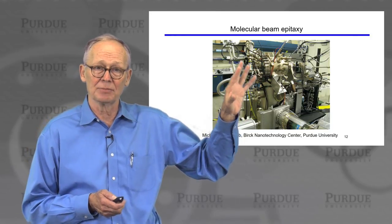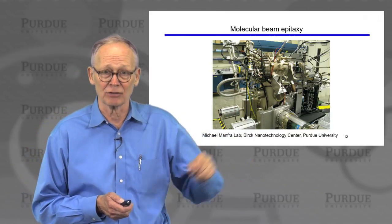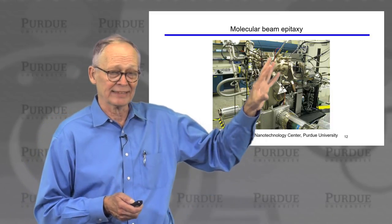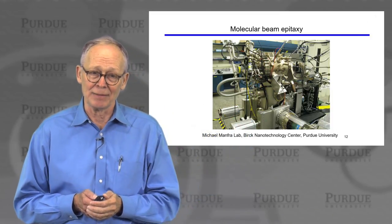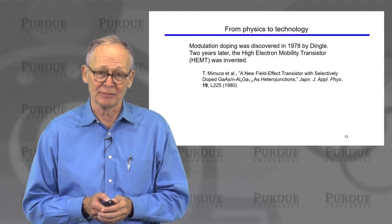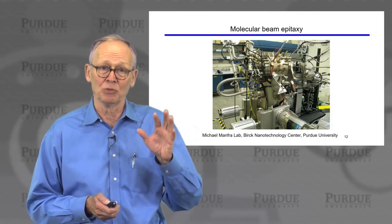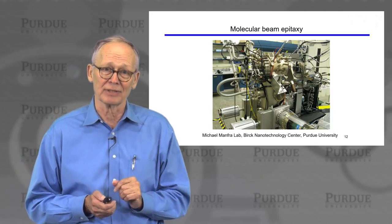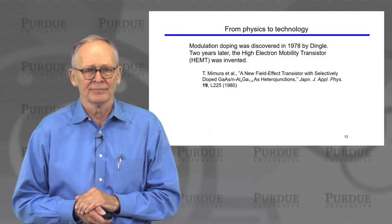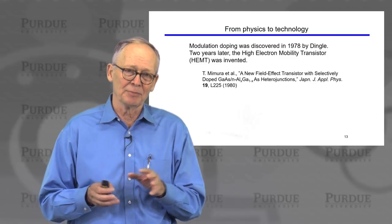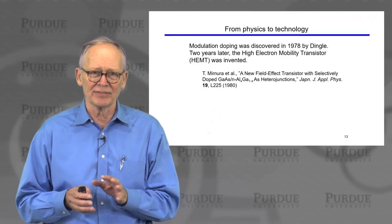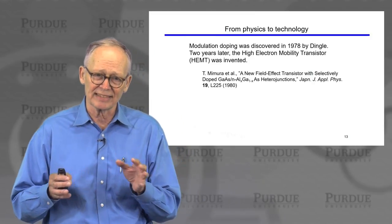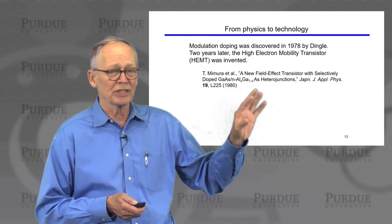These structures are grown in sophisticated MBE or MOCVD systems. An example MBE system has achieved electron mobilities of more than 35 million at low temperatures — an amazing demonstration of the physical effect discovered in 1978, which has also been very important in many physics experiments.